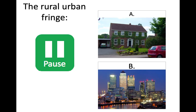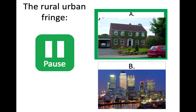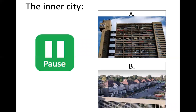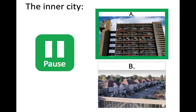Which of these, A or B, is a photograph of the rural urban fringe? It's A. The rural urban fringe is the zone on the outskirts of the city with large houses and lots of green space. B, of course, is Canary Wharf — one of London's CBDs. Which of these pictures shows the inner city? It's A — a 1960s tower block built in the inner city with a dense population, compared to B which shows the suburbs.